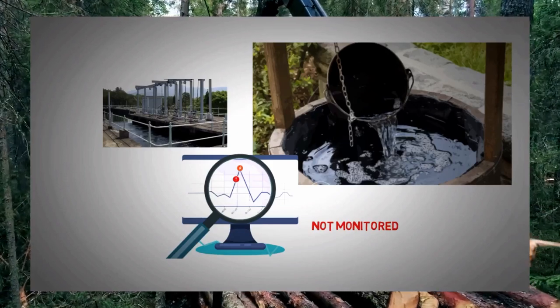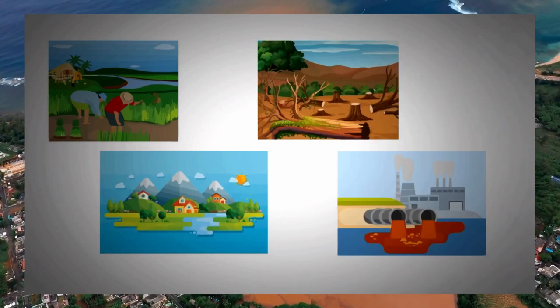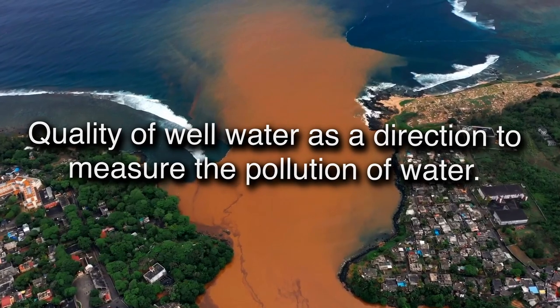Most of the well water sources are being polluted by agricultural activities, human settlement, deforestation, and industrial waste. We need to determine the quality of well water as a direction to measure the pollution of water.